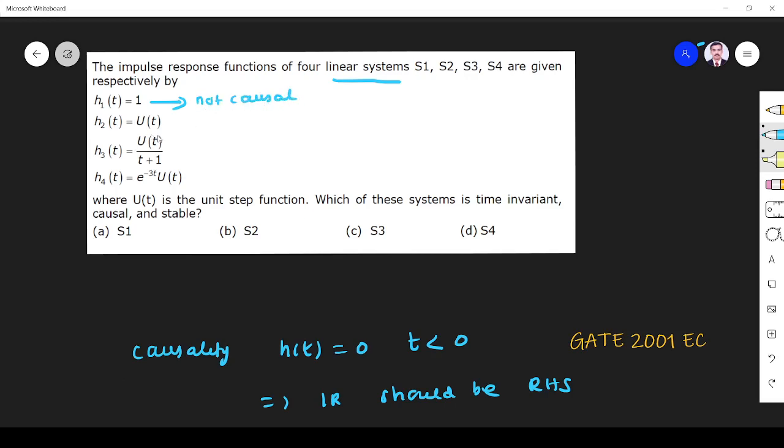Second one - yes, this is existing only for t > 0, because we know U(t) exists for right-hand side only. So it is causal. Here, this one, you see, this is U(t), it is existing for right-hand side only, no problem. So causal.